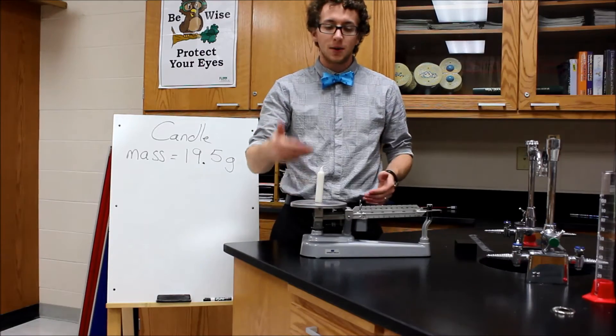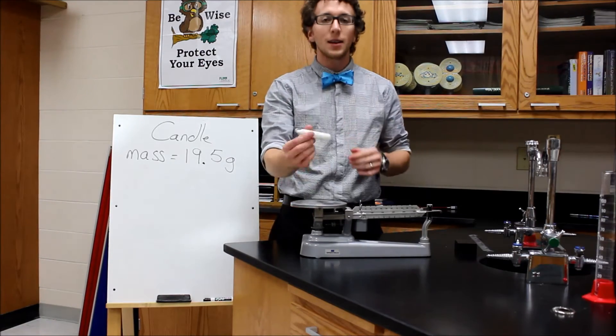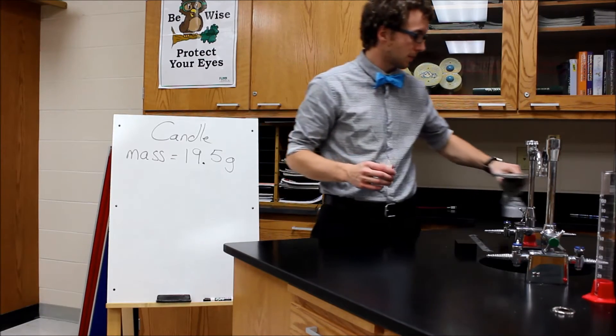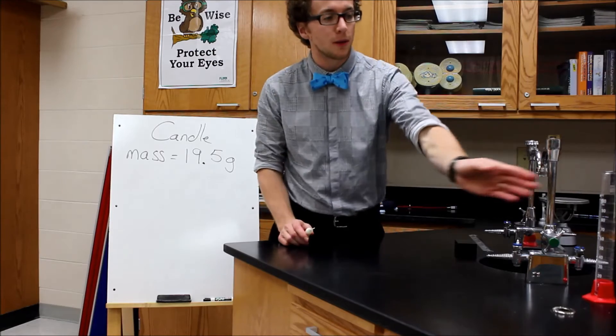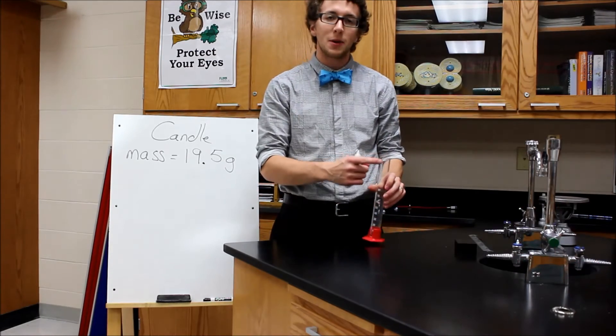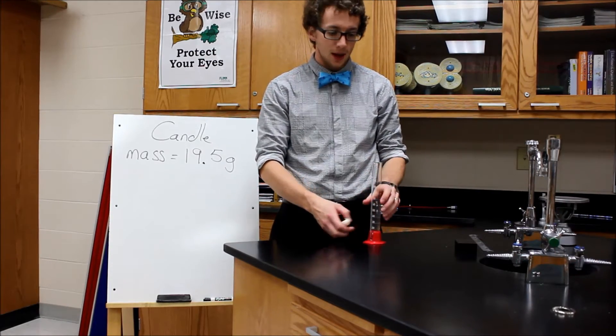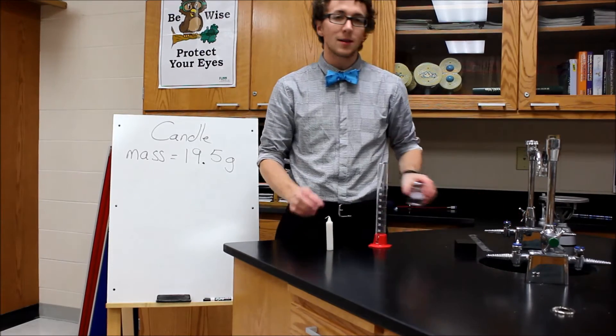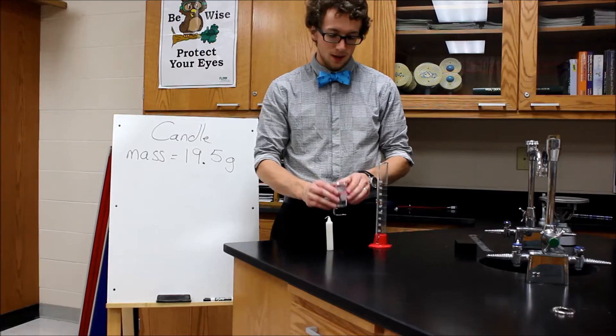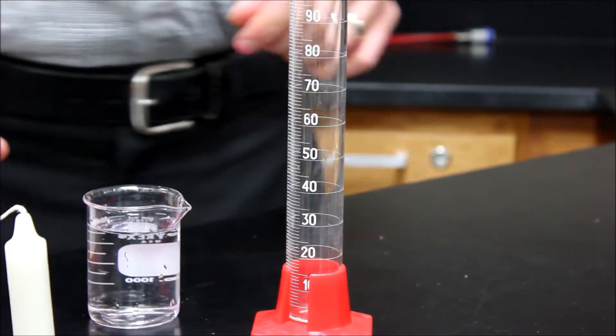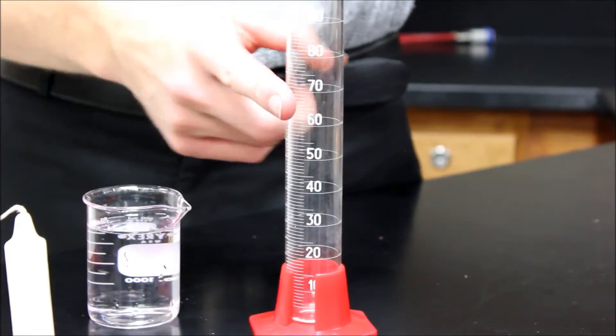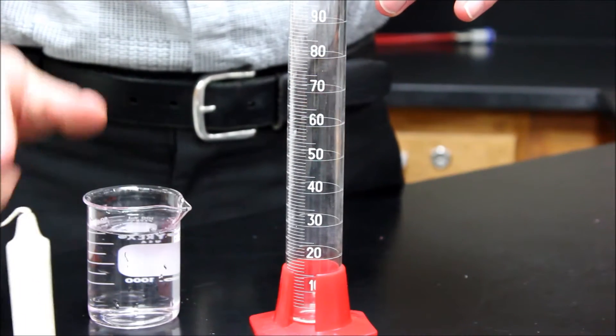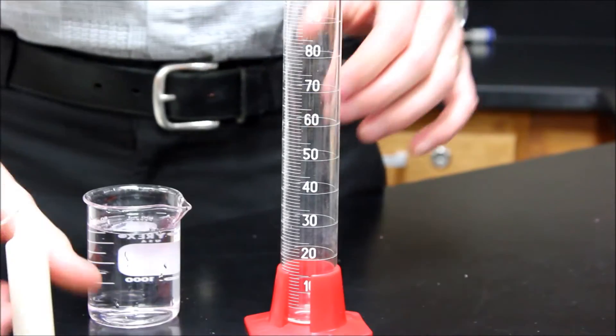All right, now that we've found the mass of the candle, we can move this off to the side and now we can work with the volume. So I use my graduated cylinder, my object, and some water. With my graduated cylinder, my water, and my candle, I'm able to find the volume of my candle.